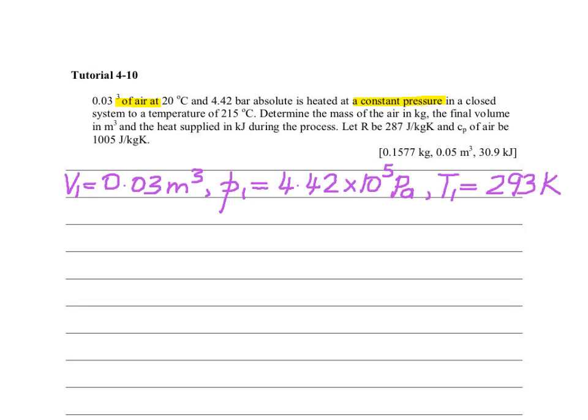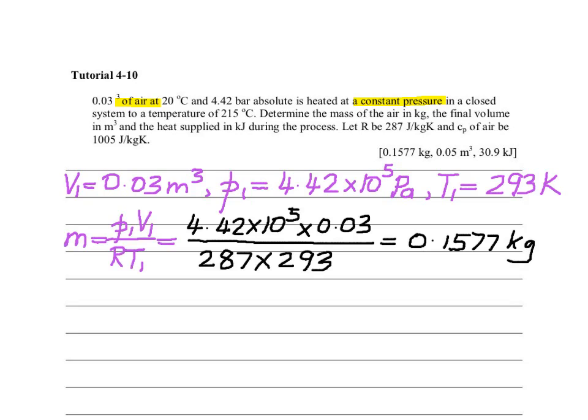We first write the parameters that we have available to us: V1, P1, T1. Next, using the perfect gas relation, we make m the subject of the formula and we calculate the mass flow rate.